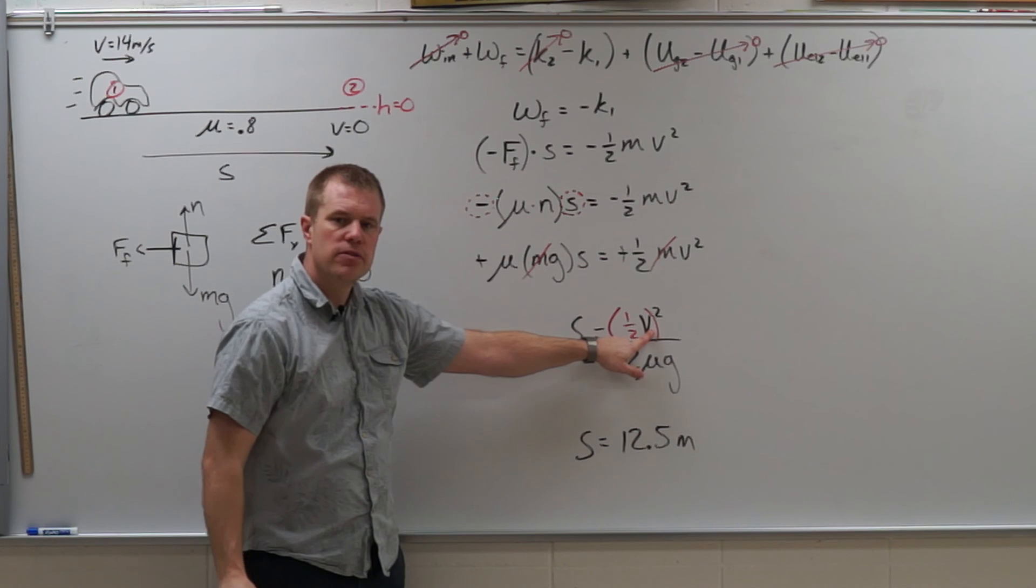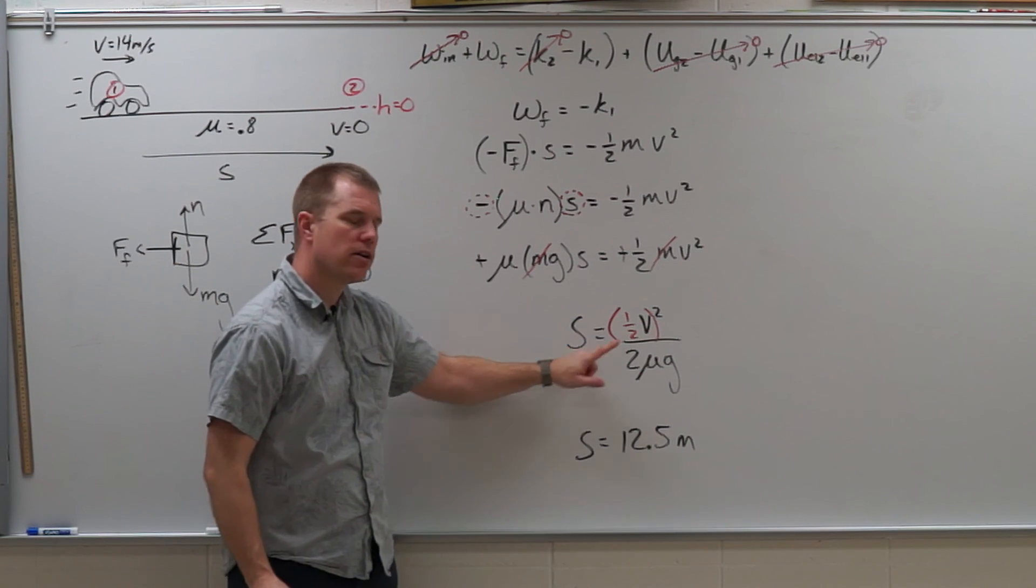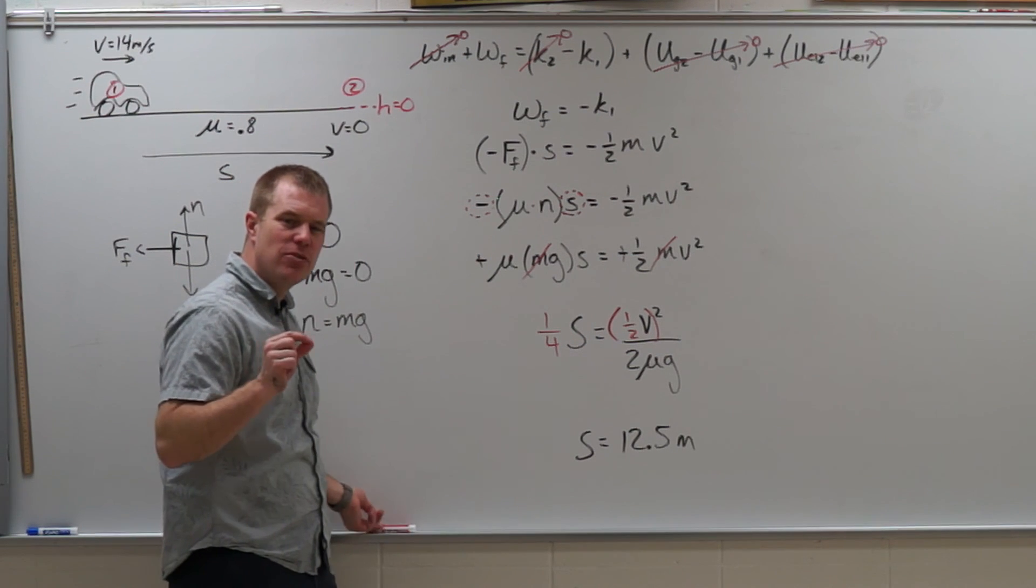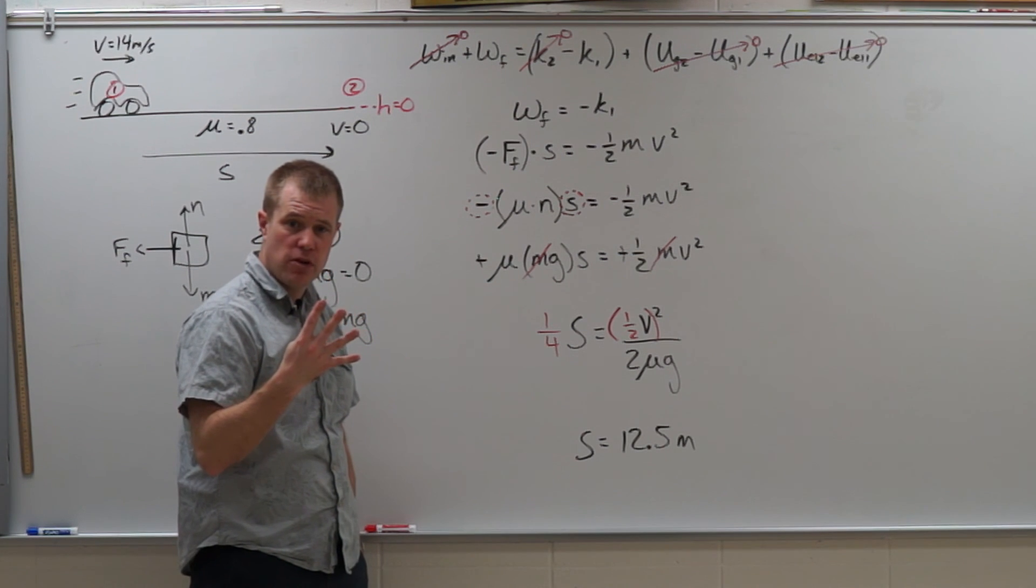But velocity is squared. So what is a half squared? Well a half squared is a fourth. So you will decrease your distance that it takes you to stop in that school zone by a factor of 4 when you slow down.